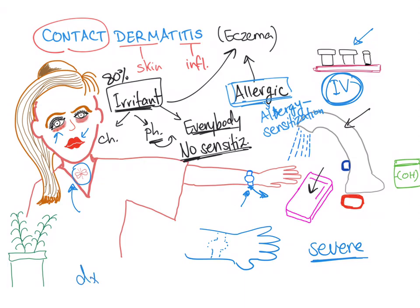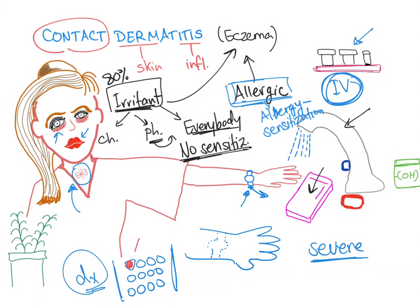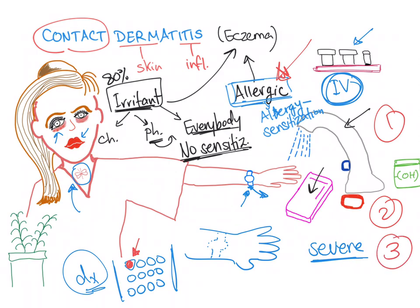There is a test to diagnose contact dermatitis called the patch test. The physician will apply different patches to the back of the patient, and you will see which one of these agents led to the allergic reaction — identifying the cause of the allergic contact dermatitis. For treatment: first identify the agent; if it's mild, use topical steroids; if it's severe, use systemic steroids. Note that delayed type hypersensitivity reaction occurs between 24 to 72 hours after exposure — that's why it's called delayed. That's contact dermatitis.